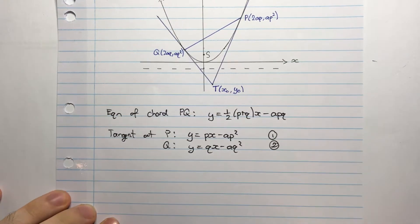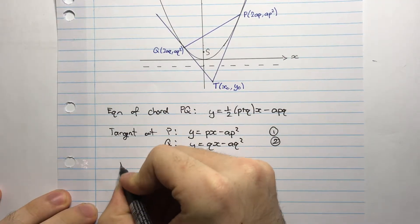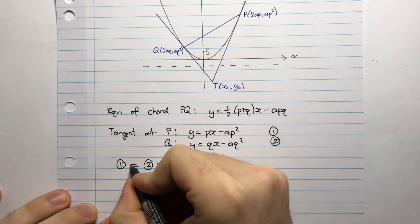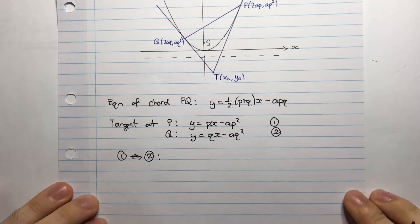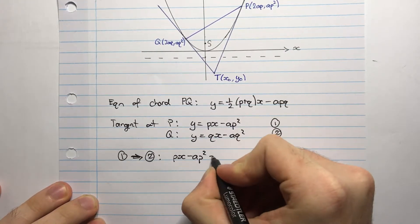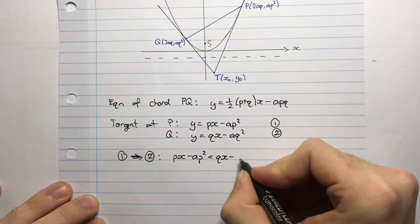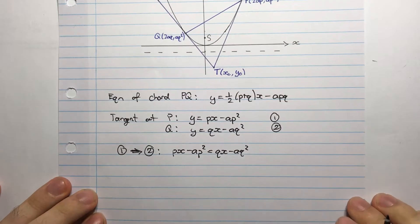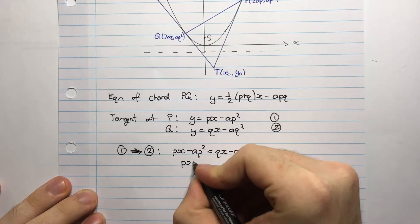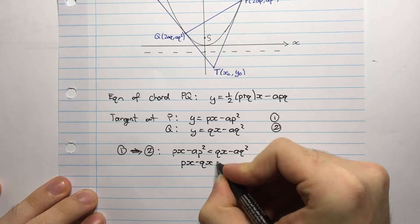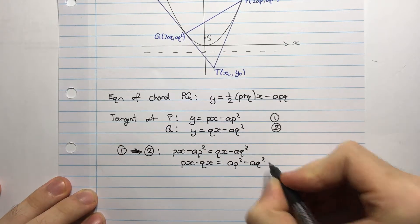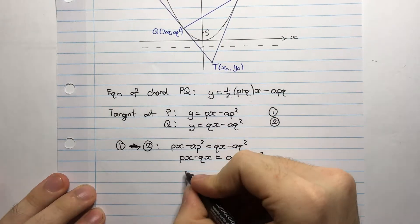So I'll call this 1, call this 2, and set 1 equal to 2. Or substituting 1 into 2 rather, that's the better way to say it. So that's going to give me PX minus AP squared equals QX minus AQ squared. I'll bring this over here and bring that over here. So PX minus QX equals AP squared minus AQ squared.